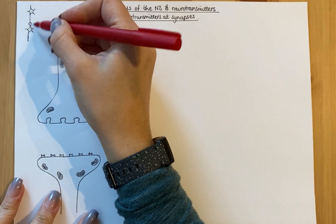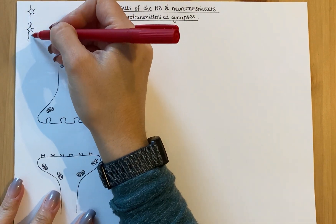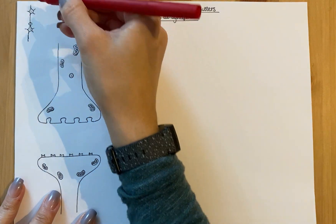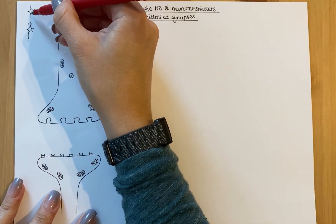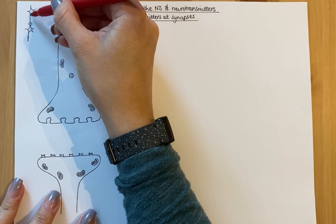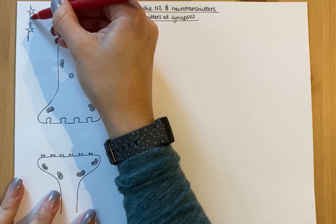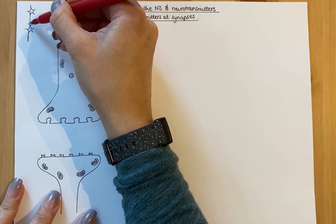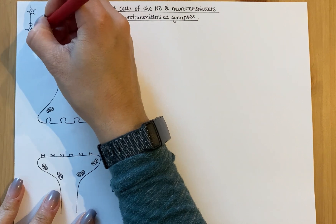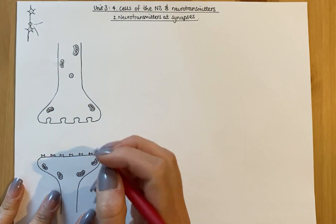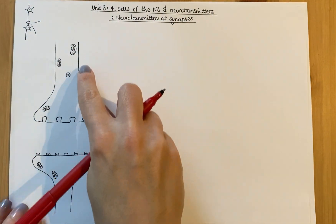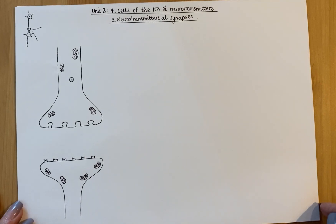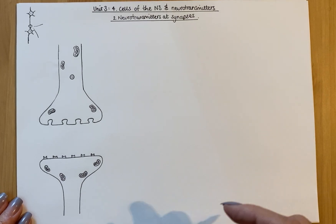These two parts should be very basic drawings of two neurons. I've got a neuron here showing a cell body and then an axon coming down. This area I've circled is a synapse, and this is what I'm going to zoom in on. This is showing a synapse within a neural pathway.